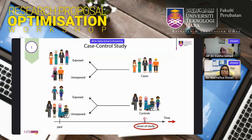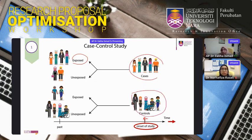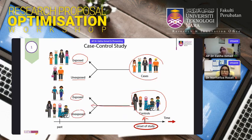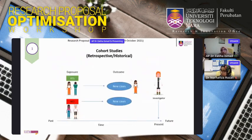In a case-control study, we have cases and controls. Standing at the present, we look backward at the history of both groups — for example, lung cancer cases and controls — to determine whether they were exposed to smoking. Cases are those with lung cancer and controls are those without, and we ask retrospectively about their smoking history. Because we have cases and controls, we call it a case-control study.